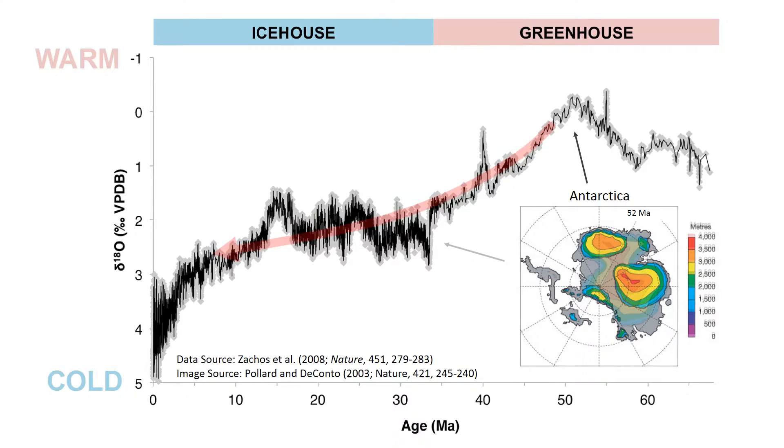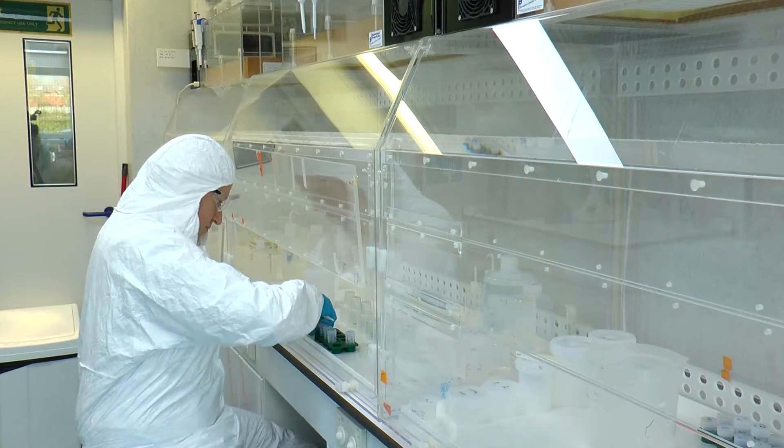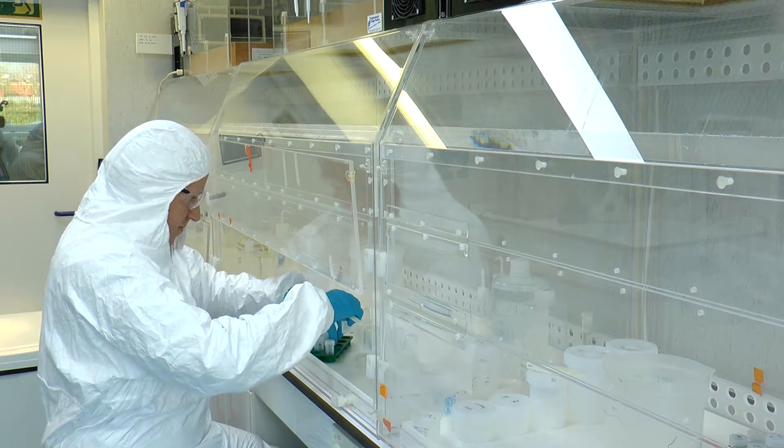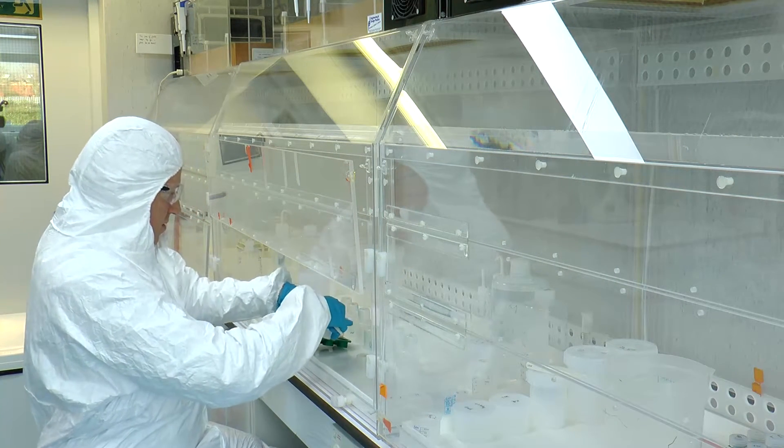We wanted to test whether that transition was driven by changes in the way that the continents are configured, changes in the way that the ocean currents behave, or whether it was changes in the atmospheric concentration of certain greenhouse gases like carbon dioxide. There are two principal ways to try and understand this major transition: firstly, we can reconstruct the climate system of the past, and the other way is to use climate models to interrogate that understanding and get to the bottom of why the climate is changing.